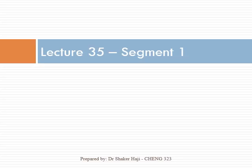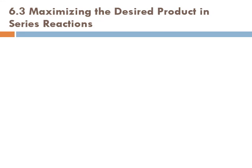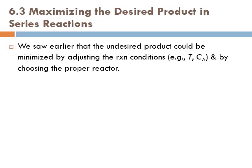Lecture 35 covers maximizing the desired product in series reactions. In the previous lecture we talked about maximizing the desired product in parallel reactions — we saw that the undesired product could be minimized by adjusting reaction conditions, for example by changing the temperature or the concentration, and by choosing the proper reactor.